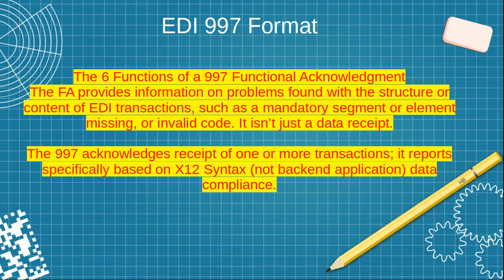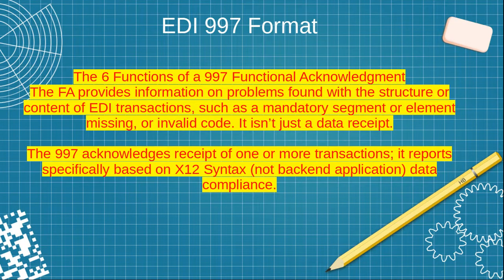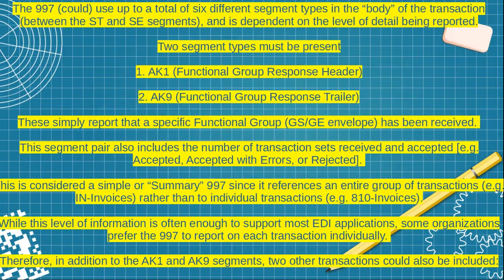Regarding the format of the 997 file: the 997 functional acknowledgement provides information on problems found in the structure or content of the EDI transaction, such as a mandatory segment or element missing or an invalid code — it's not just a data received confirmation. The 997 file acknowledgement covers one or more transactions, and reports especially based on X12 syntax. A 997 could use a total of six different segments in its body parts between the ST and SE.